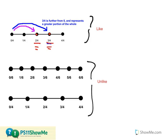Since I'm working with two different denominators within my two fractions for unlike fractions, it makes sense for me to create two different number lines, where each of the number lines are partitioned into the total number of parts out of that entire fraction. So for two-sixths, I would want to first partition a number line into sixths.